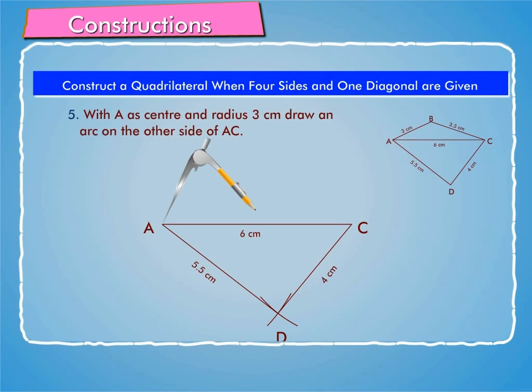Step 5: With A as center and radius 3 cm, draw an arc on the other side of AC.